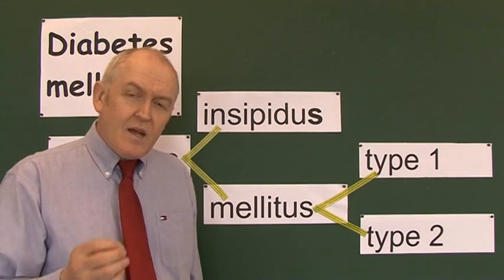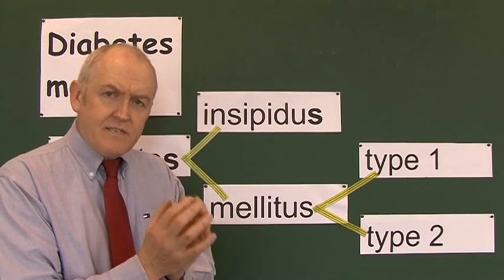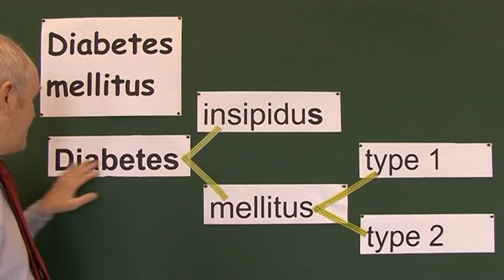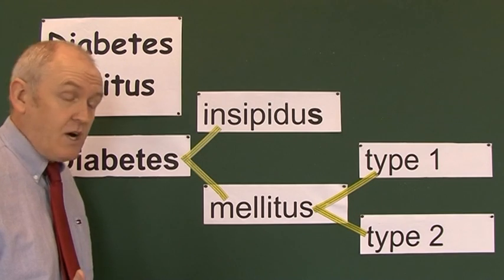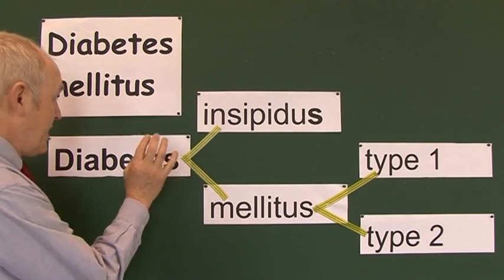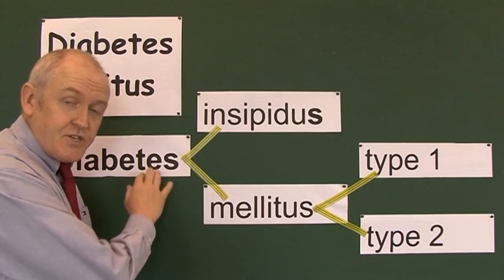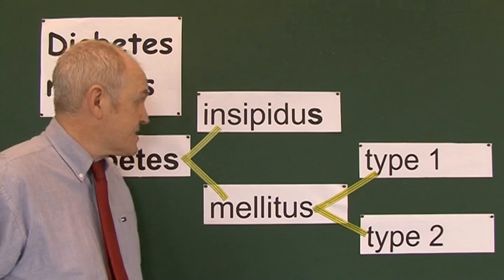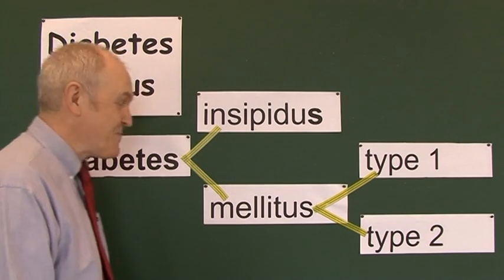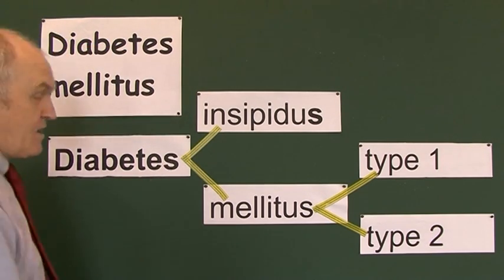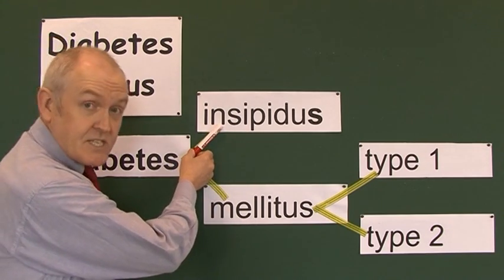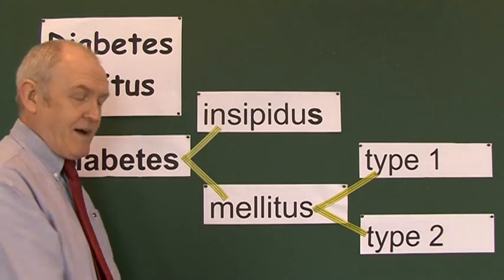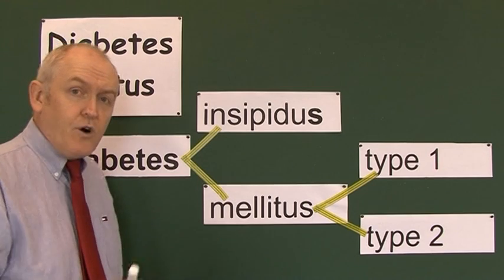Before we get into the meat of this talk, let's be absolutely clear about our definitions. Diabetes refers to polyuria — a lot of water going through the body. There are two types of diabetes: insipidus and mellitus. This talk is about diabetes mellitus, but let's briefly address diabetes insipidus first.